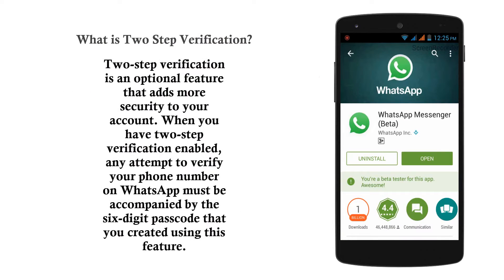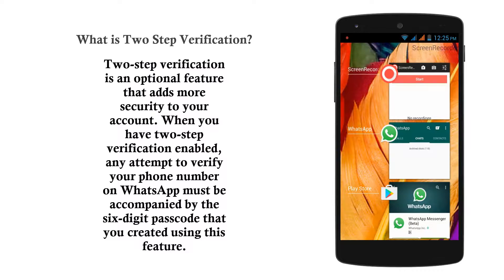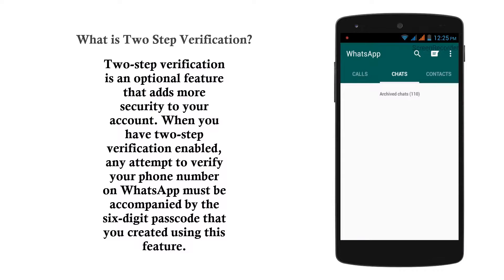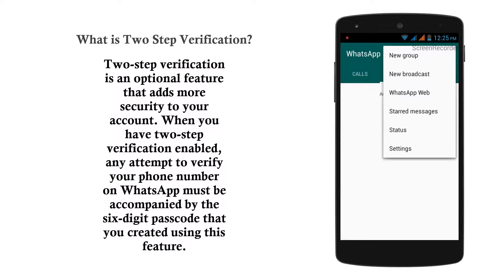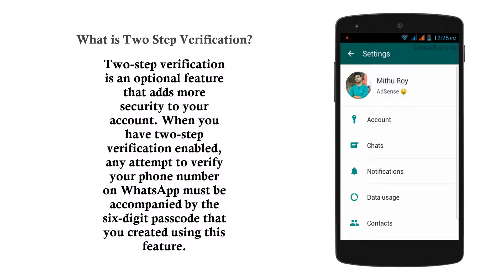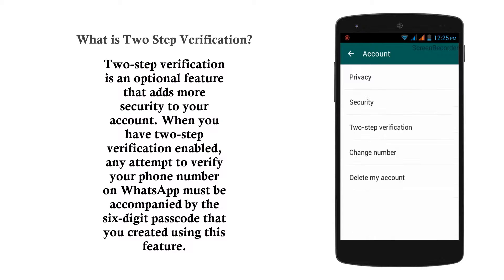Now let's talk about WhatsApp two-step verification. It basically gives you an added layer of security. What it actually does is — let's say you lost your phone and someone finds it and tries to configure your WhatsApp account with your number. But if you have two-step verification enabled, they can't really do it without the passcode that you have set for your account. It is a pretty good feature from WhatsApp.